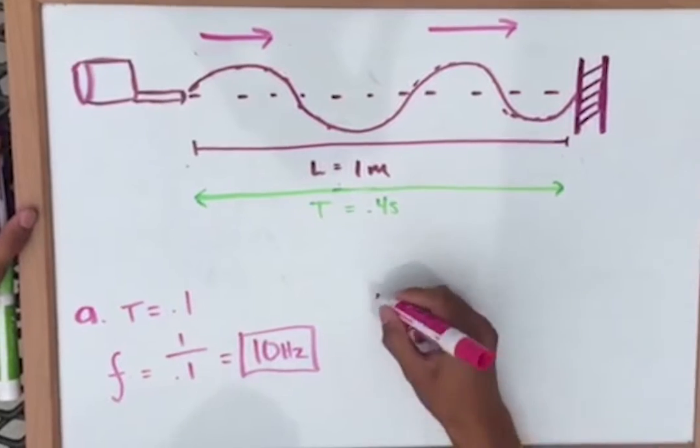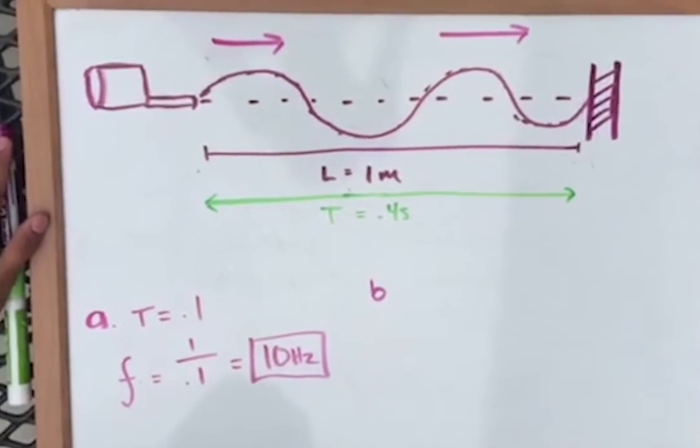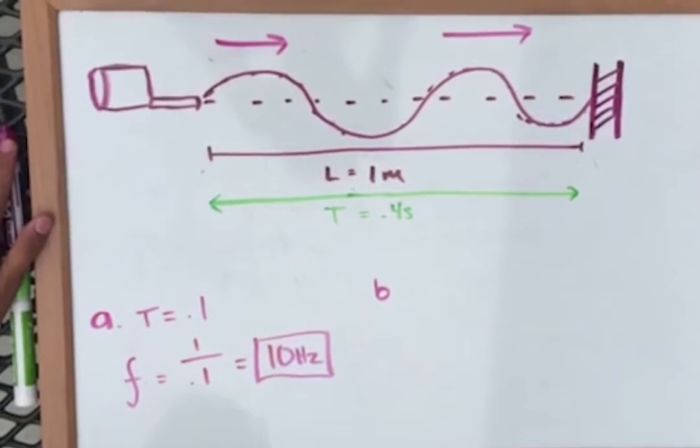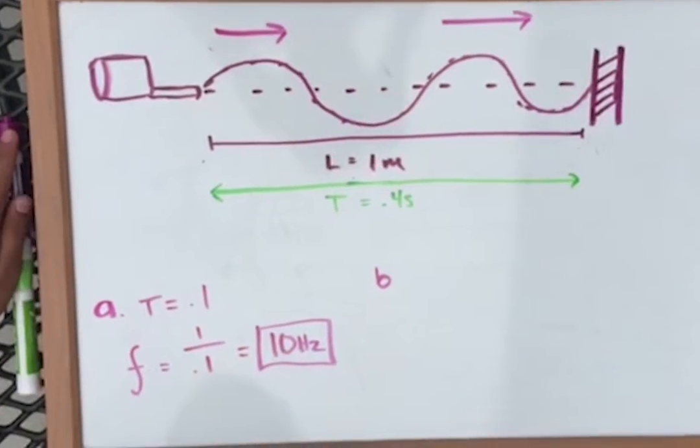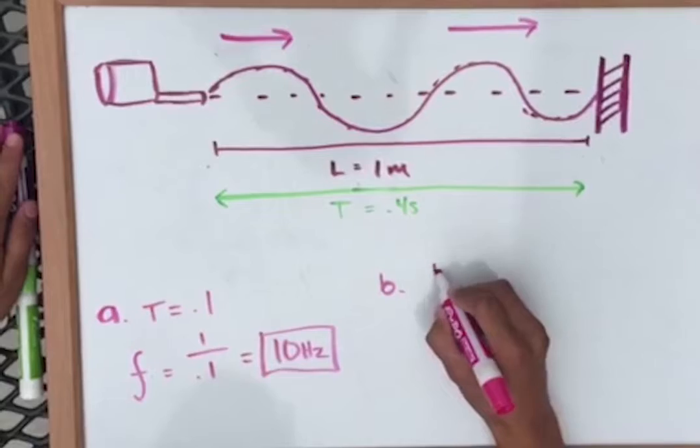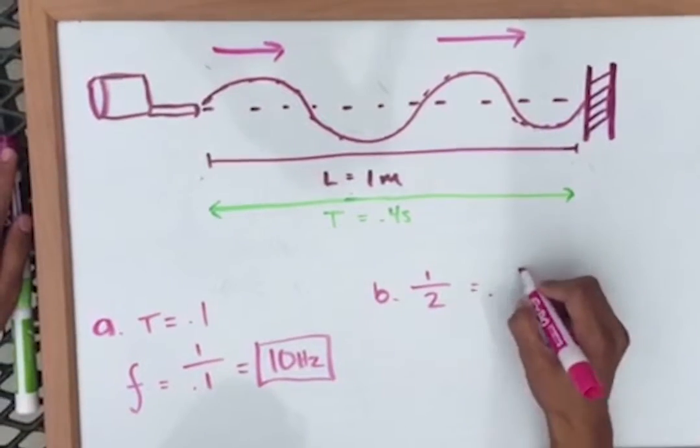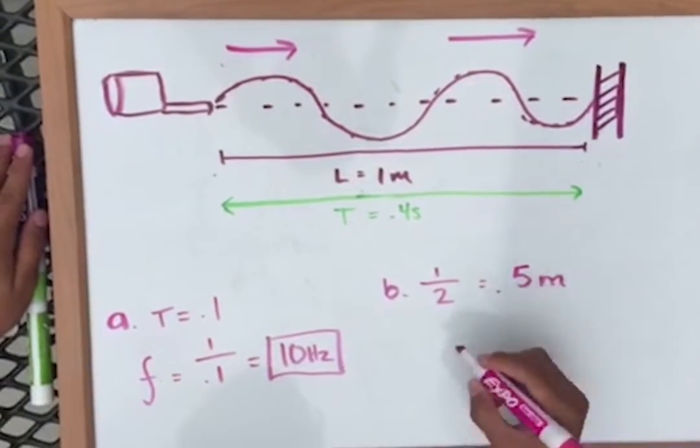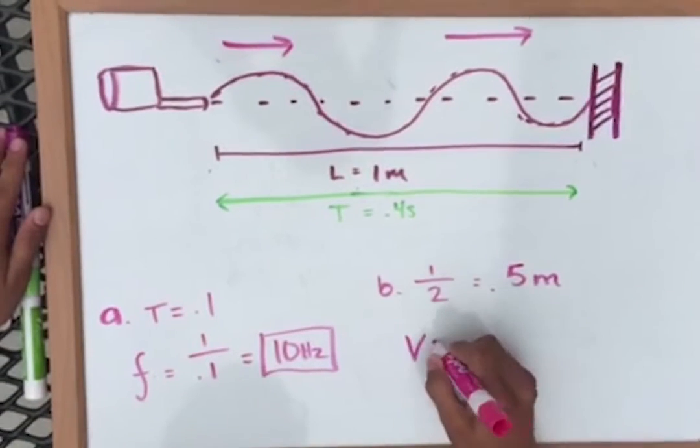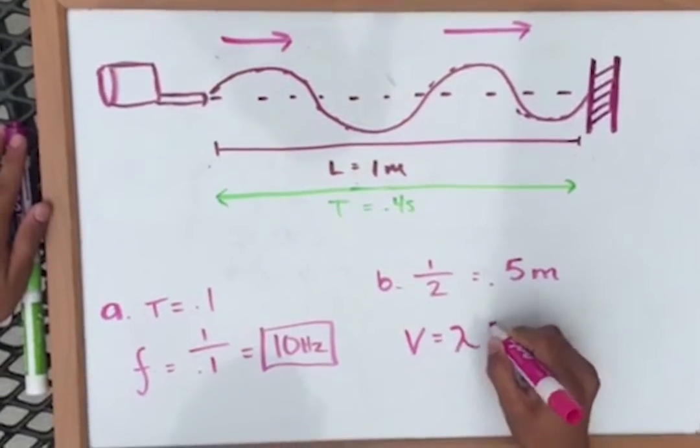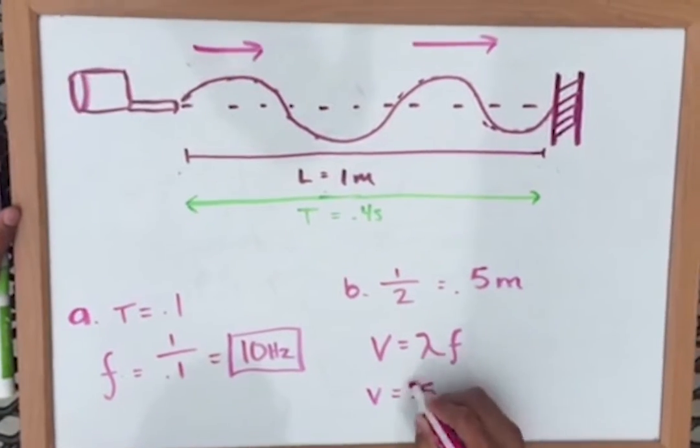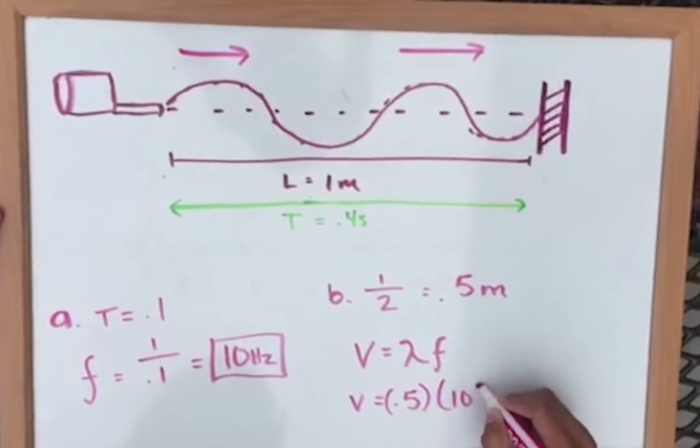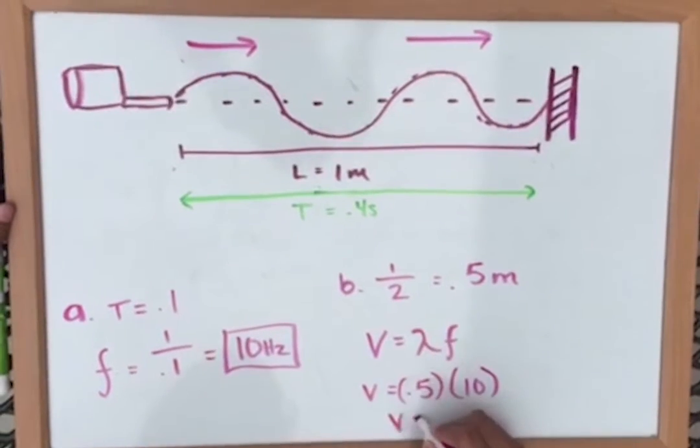And for part B, we need to find the wavelength. And since the length of the string is 1 meter, and there are two wavelengths in that length, 1 divided by 2 is 0.5 meters as the wavelength. And you plug that value into velocity equals lambda times frequency. And lambda, which is 0.5 times 10 Hertz, is equal to 5 meters per second.